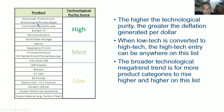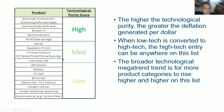The highest-tech type of product that exists in the world today at any substantial scale is advanced productivity-enhancing software. Commoditized software, biotech IP, semiconductors, and solid-state storage are also very high — these have high technological purity. Medium technological purity are ones that have more hardware components and certain low-tech elements that have to be wrapped around the high-tech core: a server, a Raspberry Pi unit, a finished product like a PC, tablet, smartphone, or an individual LED.